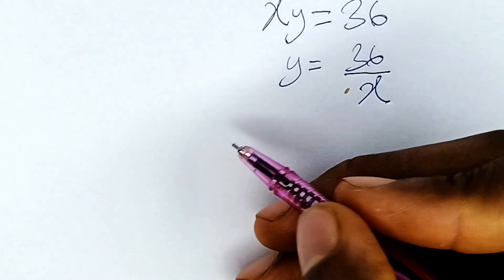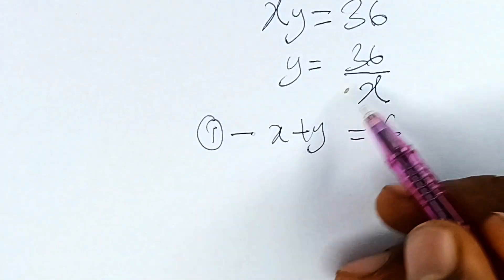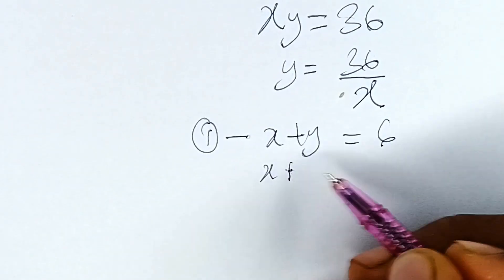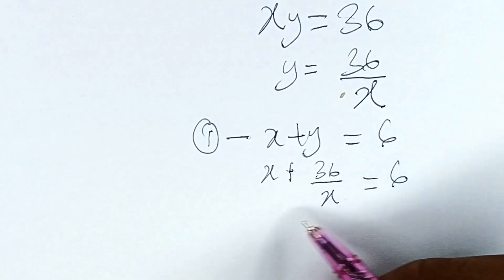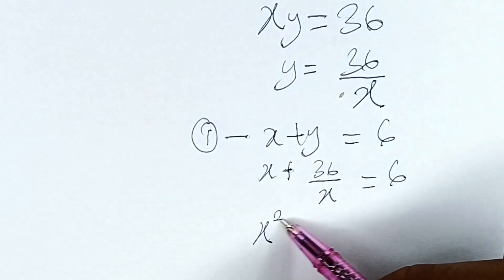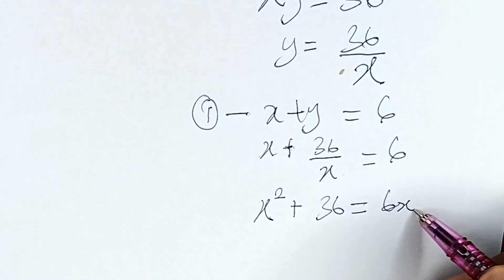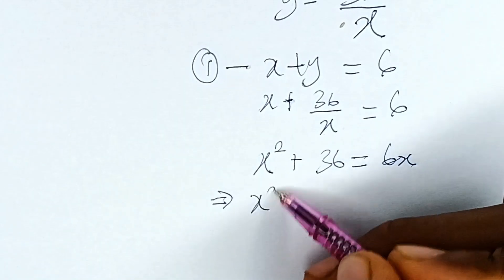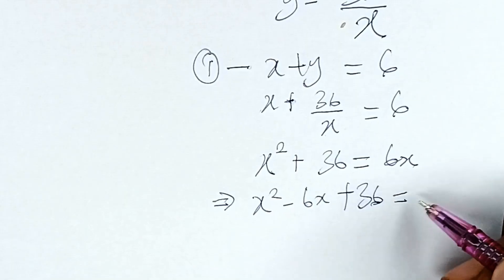Equation 1 is x plus y is equal to 6. Now if we put y as 36 over x, it becomes x plus 36 over x is equal to 6. Let's multiply each term by x. So x times x is x squared, 36 over x times x is 36, and 6 times x is 6x. This implies that x squared minus 6x plus 36 will now become equal to 0.